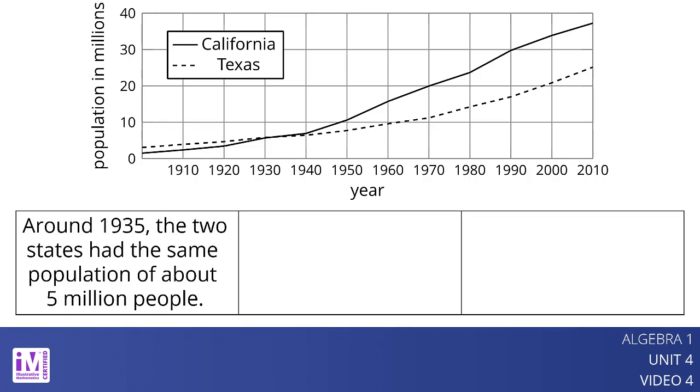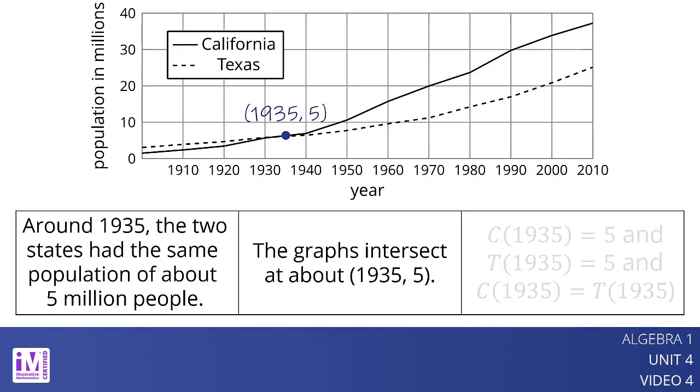Around 1935, the two states had the same population of about 5 million people. We can tell because the graphs intersect at about 1935 comma 5. We can convey this using function notation by writing c of 1935 equals 5, and t of 1935 equals 5, and c of 1935 equals t of 1935.